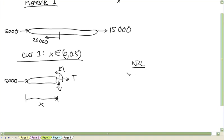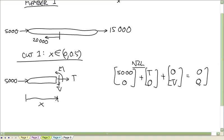Newton's second law says 5,000, 0, plus T, 0, plus 0, negative V, is equal to zeros. So T is equal to negative 5,000, V is equal to 0.